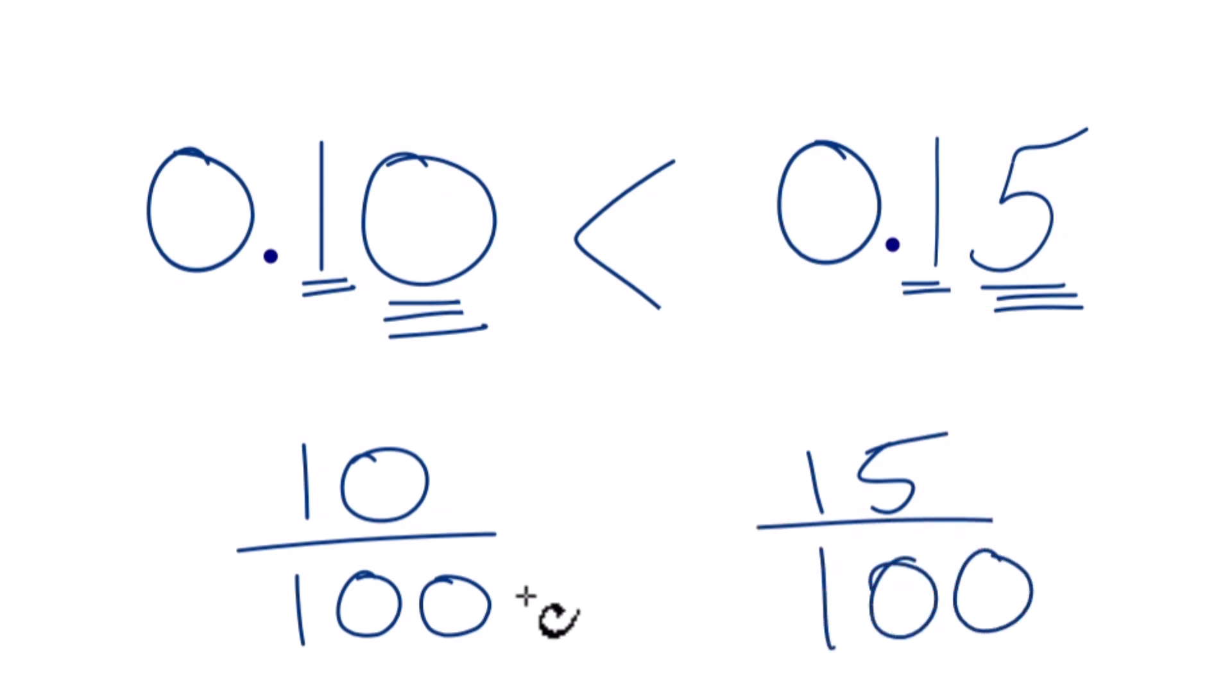When we compare, the denominators are the same, so we compare the numerators. 15 is greater than 10, so 15 one-hundredths is greater than 10 one-hundredths, and 0.15 is greater than 0.1 or 0.10.